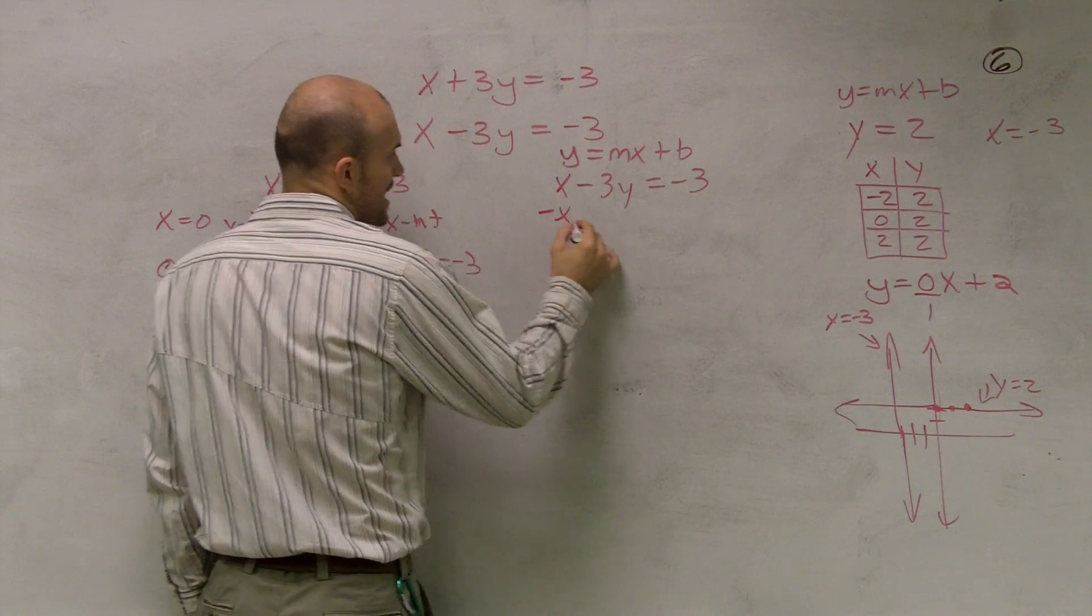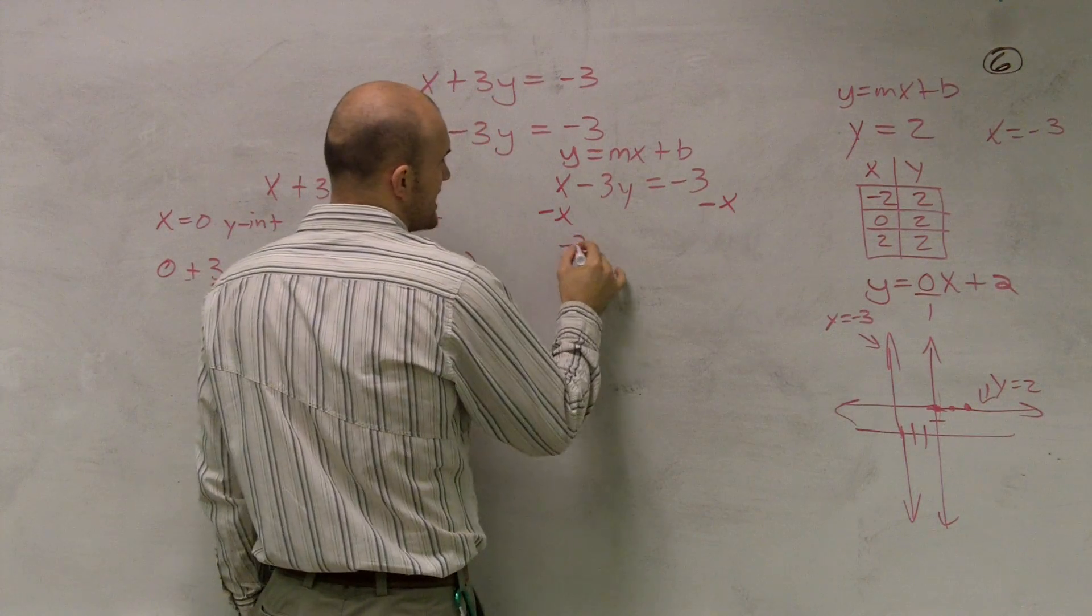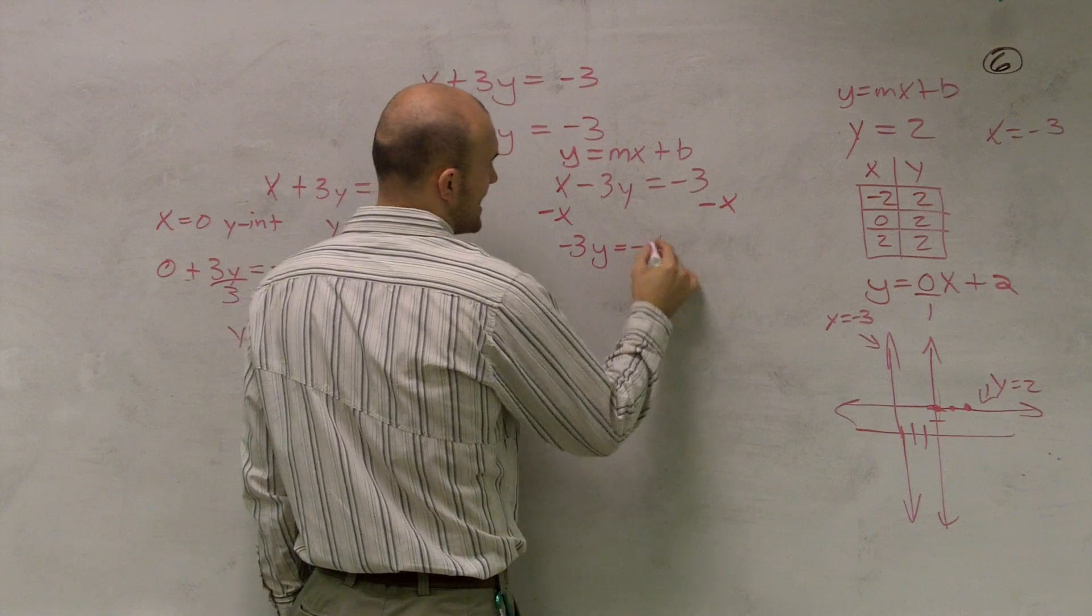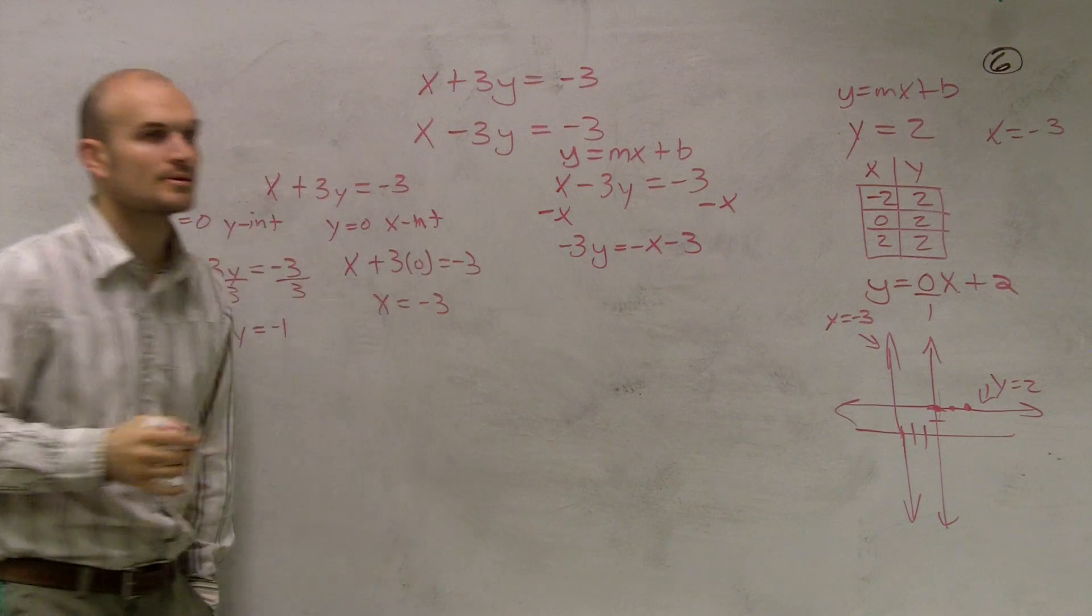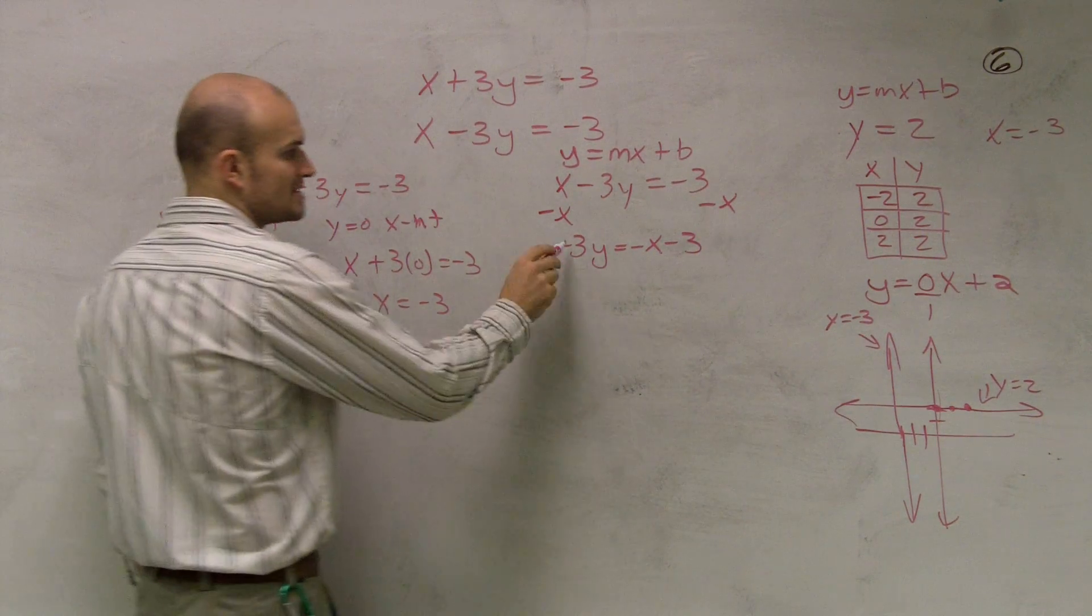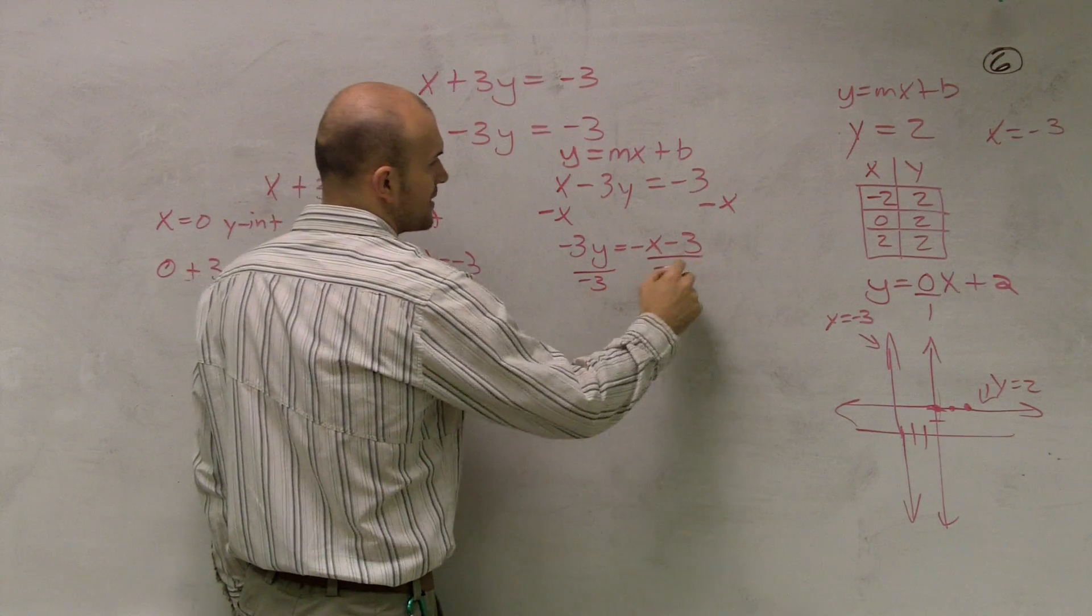So to do that, I'm going to subtract the X. And I'll have a negative three Y equals negative X minus three. Now, the next thing I'm going to do is to get rid of this negative three. I'm going to divide by negative three.